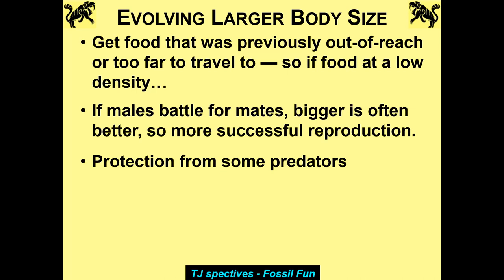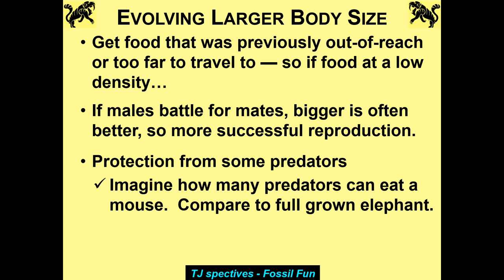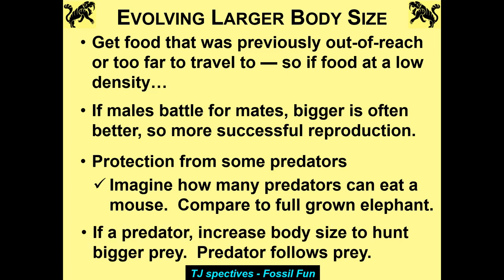If you're bigger, you get protection from some predators. Think how many predators can eat a mouse — even a shrew can kill a mouse, and a wolf can kill a mouse. How many can kill a full-grown elephant? In the modern world, nobody. In the past, hardly anybody — though there were saber-tooths that specialized on baby elephants. If you're a predator, you increase body size to hunt bigger prey — so you have an evolutionary arms race. Predator follows prey. If prey is adapting to open habitat and becoming bigger, the predators follow that.